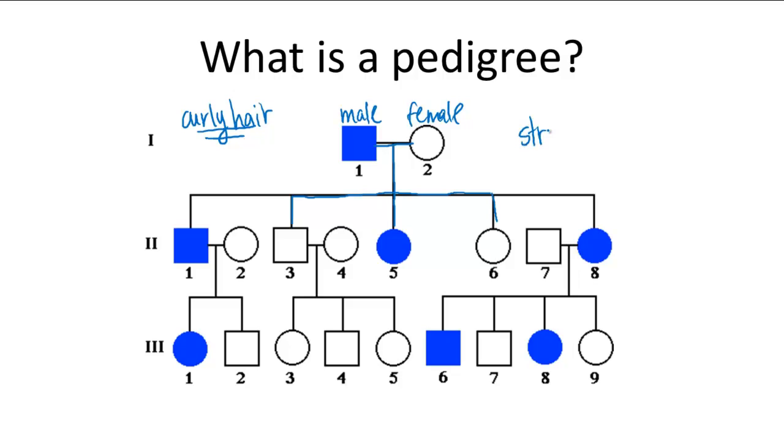Let's simplify things and just say that they exhibit straight hair instead. So to read this pedigree chart goes something like this.